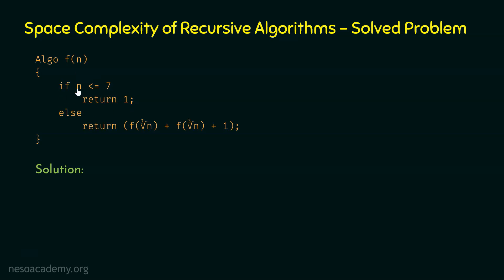The base case will be executed when n is less than or equal to 7. Our job is to find the space complexity of this algorithm. In order to find the space complexity, we need to know the flow of function calls, because space complexity depends on the depth of recursion and also on the data structure used. In this specific algorithm, we are not using any complex data structure. Therefore, the space complexity depends entirely on the depth of recursion. To find the depth of recursion, we need to observe the flow of function calls and form a tree-like structure.